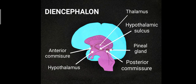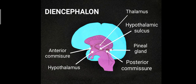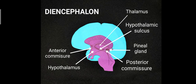Here you can see a representation of the Diencephalon. The thalamus is visible, and on the bottom of the thalamus you can see the hypothalamic sulcus which divides the Diencephalon into pars dorsalis and pars ventralis. The hypothalamus lies below the hypothalamic sulcus. In front is the anterior commissure, and at the posterior end is the posterior commissure. A small structure here is the pineal gland, which we will discuss later. This concludes the structures pertaining to the Diencephalon.